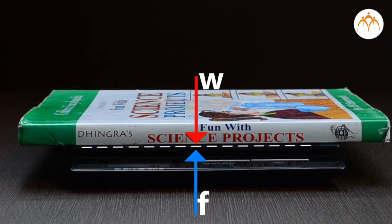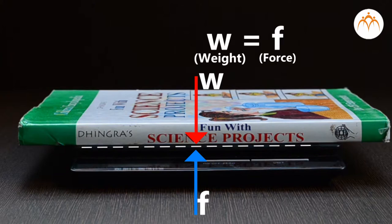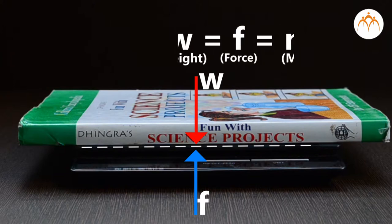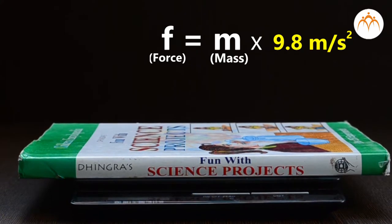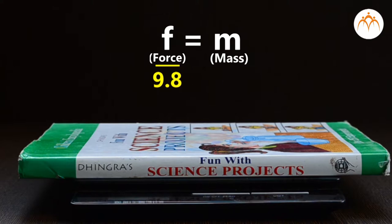This is opposed by an equal force from the weighing scale. Since the book is not moving, we can say that both forces are equal. We know that this force equals the mass of the book multiplied by g, the acceleration due to gravity. The generally acceptable value of g is 9.8 m/s². These weighing scales are calibrated — the scale measures the force due to the book, divides it by 9.8, and calls it mass.